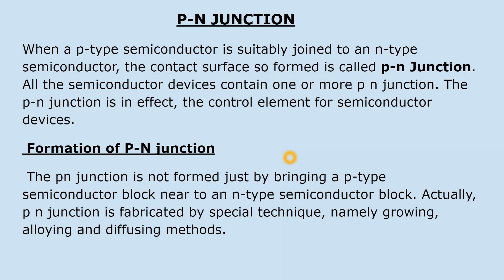P-N junction — how is a P-N junction formed? When a P-type semiconductor is suitably joined to an N-type semiconductor, the contact surface so formed is called a P-N junction. P-N junction simply P-type material को N-type material के साथ add करने से, combine करने से नहीं बनता है।